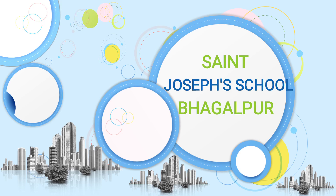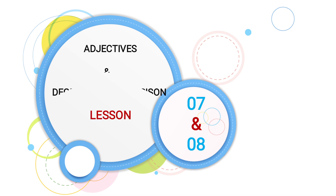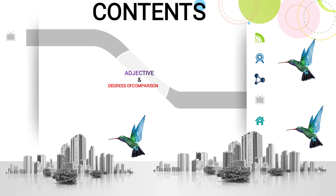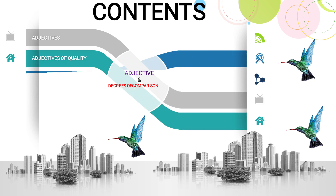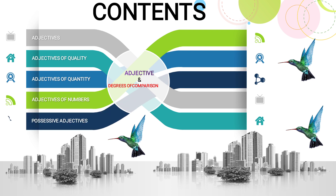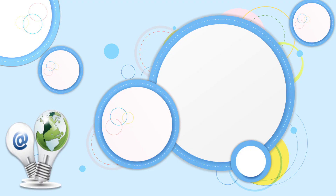Hello students! You have already learned about nouns and their types, pronouns and their various types. Today we will learn one more part of speech — adjective — and more about the degree of comparison. This is lessons 7 and 8. The content covered includes: adjective, types of adjective (quality, quantity, numbers, possessive, interrogative), and degrees of comparison (positive, comparative, superlative).